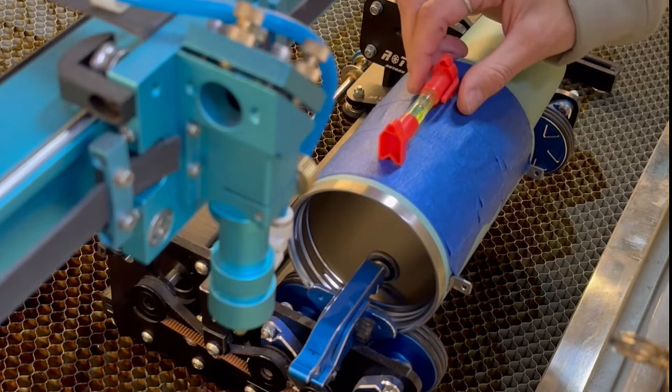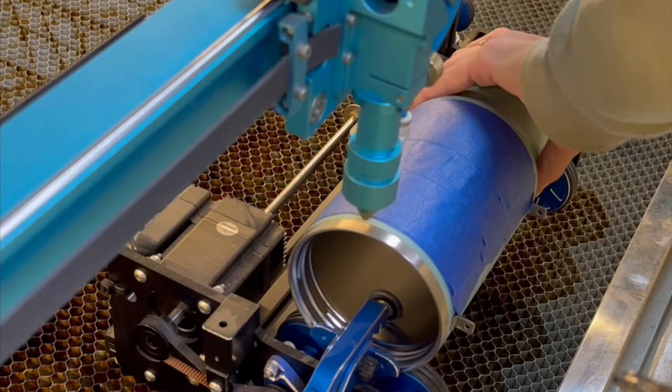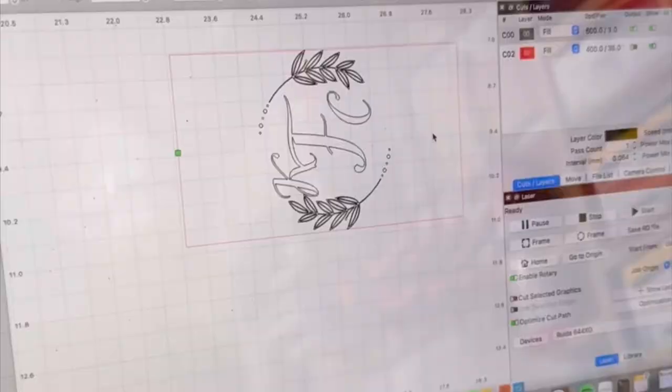I'm now going to insert the Stanley into the Rotoboss and grab my little level just to level out the cup completely. After that, I wanted to make sure that everything was perfectly square with my laser and Rotoboss. So I ran the laser back and forth just to make sure everything was aligned.